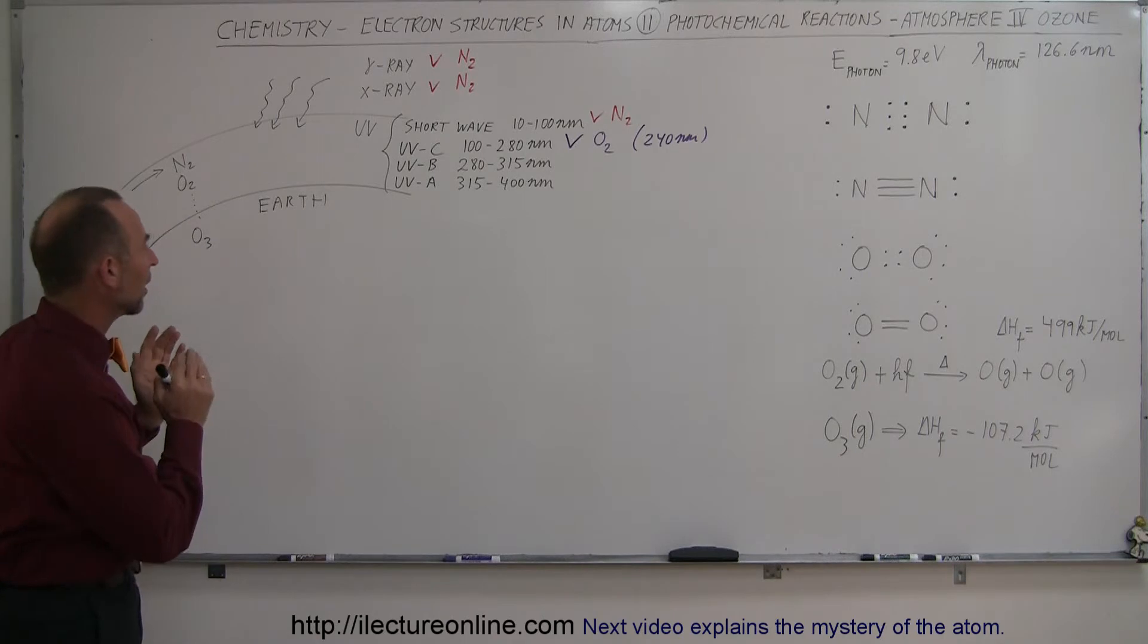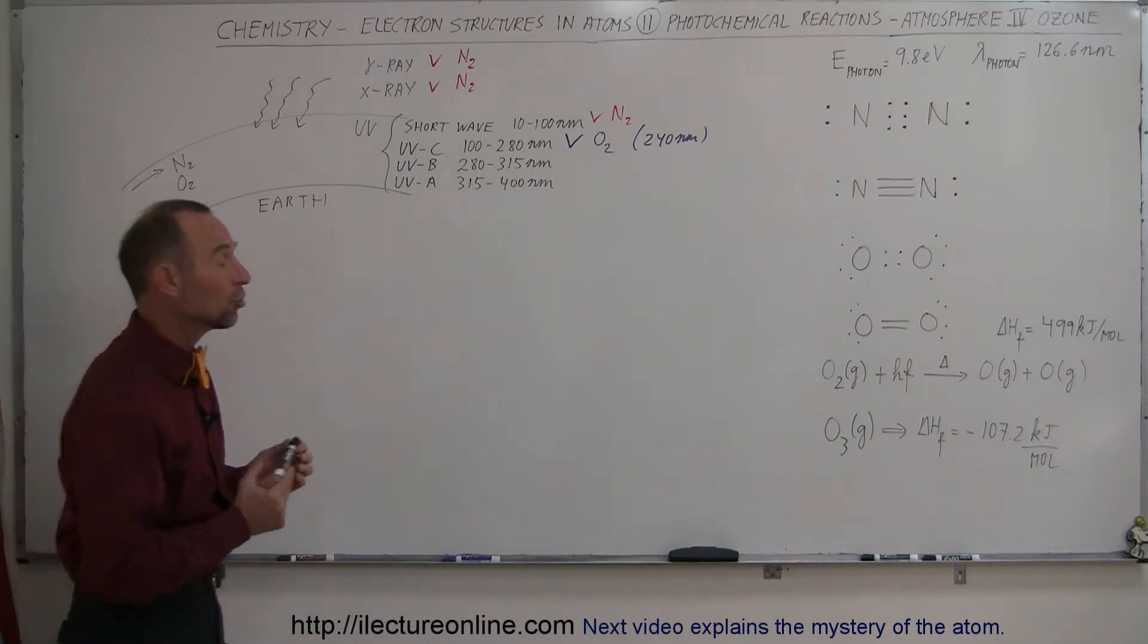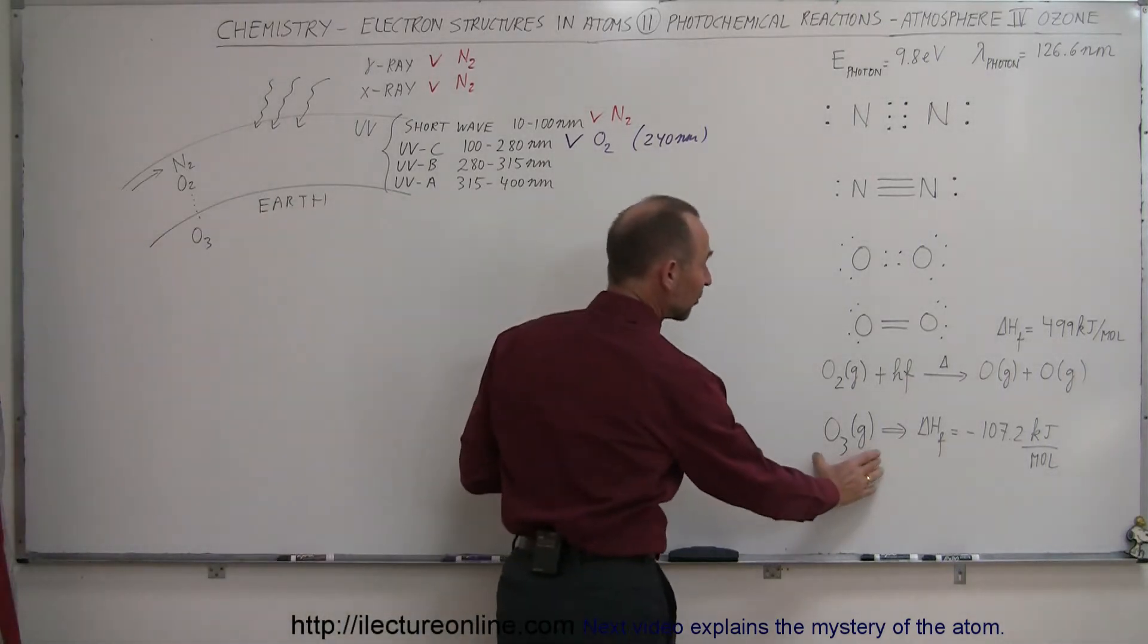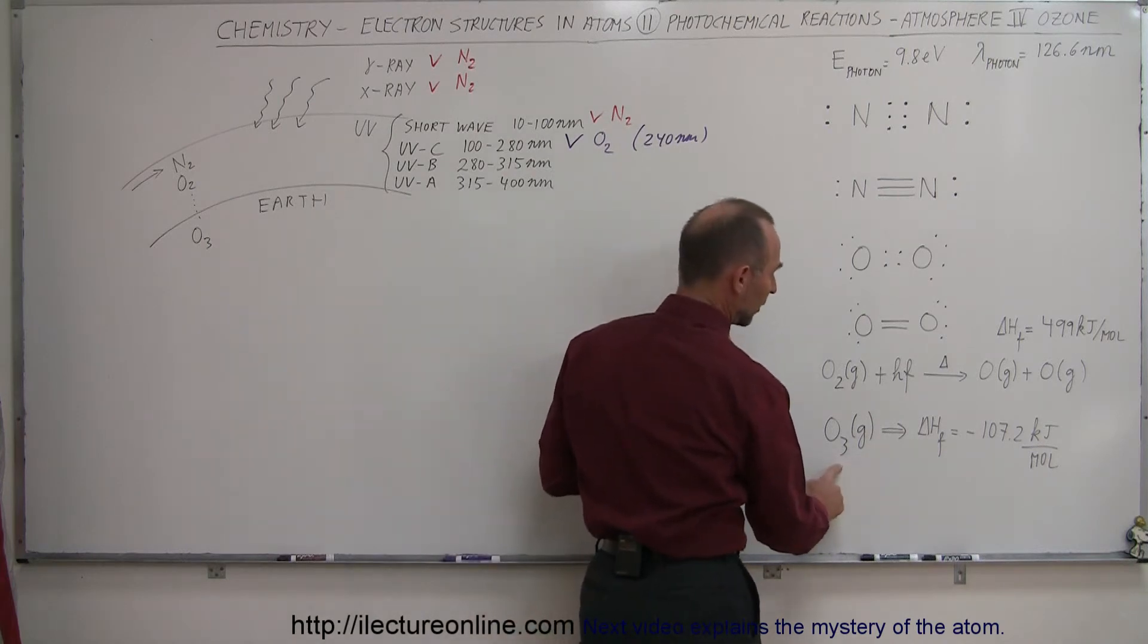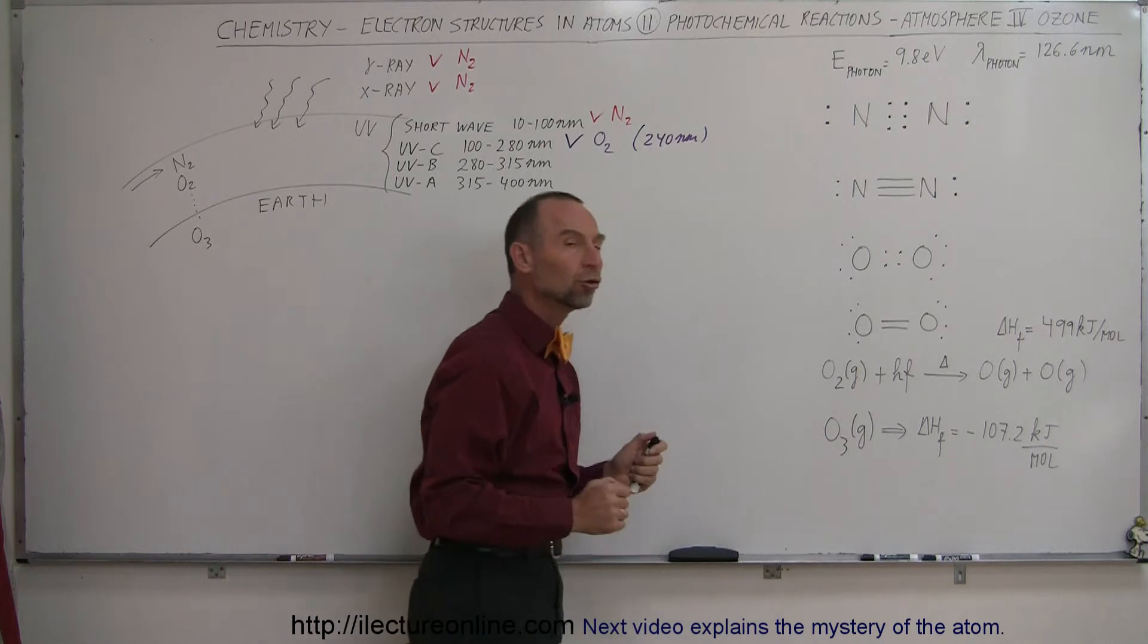Now we're going to look at how oxygen in the ozone form protects us from the remainder of ultraviolet radiation coming from space. In the last video we showed that the enthalpy of formation for ozone, or O3 molecules, was 107.2 kilojoules per mole.